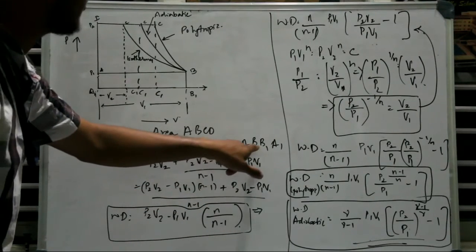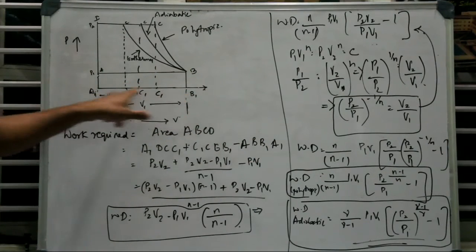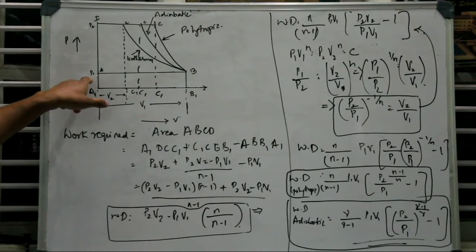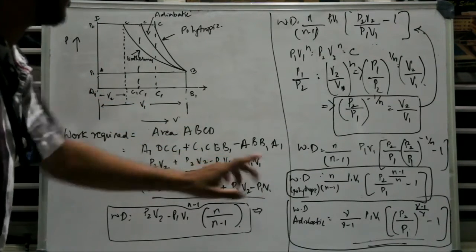So we get minus A1, B, B1, A1, that is this area, that is going to be P1 into L into B again, that is going to be P1 into V1. So we have written that here.